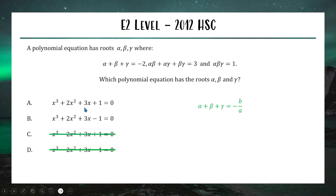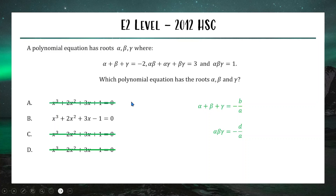Checking the first option: b is 2 and a is 1, so minus b over a is minus 2, which is what we want. Options A and B both work here; C and D have negative b values giving positive 2, so they're eliminated. For the sum of roots in pairs, all four options have c equal to 3, so we can't differentiate. Moving to the product of roots — alpha beta gamma equals minus d over a. Option A gives minus 1, not positive 1, so by elimination the answer is option B.